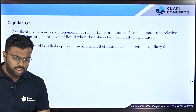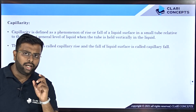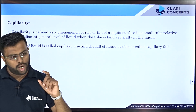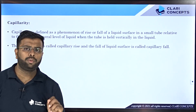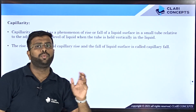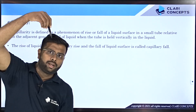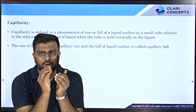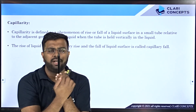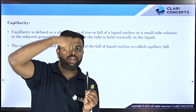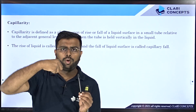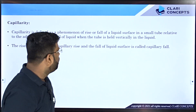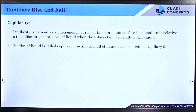Why does this happen? The attractive force between water molecules and glass molecules is different — the attractive force between glass and water molecules is much higher than between water and water molecules. When you dip a glass tube into water, the molecules along the inner surface start climbing over each other because glass attracts water molecules more strongly than water attracts water, and that is why a meniscus is also formed. This is the principle behind capillary rise.